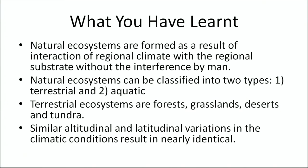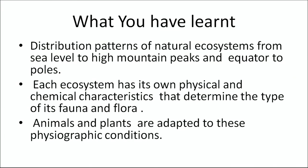Thank you Dr. Lakshmi Nirula for sharing information related to natural ecosystems such as forests, deserts and grasslands. Before we wrap up, let us recap the main points. Natural ecosystems are formed as a result of the interaction of regional climate with the regional substrate without interference by man. Natural ecosystems can be classified into two types: terrestrial and aquatic. Terrestrial ecosystems include forests, grasslands, desert and tundra. Similar latitudinal and altitudinal variations in climatic conditions result in nearly identical distribution patterns of natural ecosystems from sea level to high mountain peaks and from the equator to the poles. Each ecosystem has its own physical and chemical characteristics that determine the type of its fauna and flora. Animals and plants are adapted to these physiographic conditions.